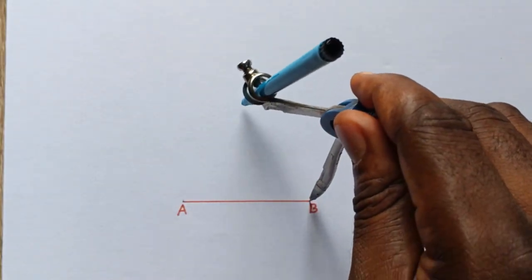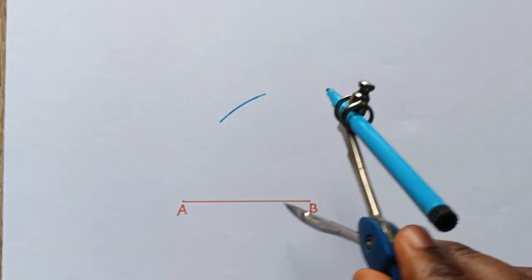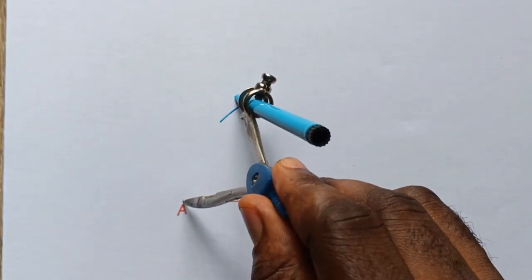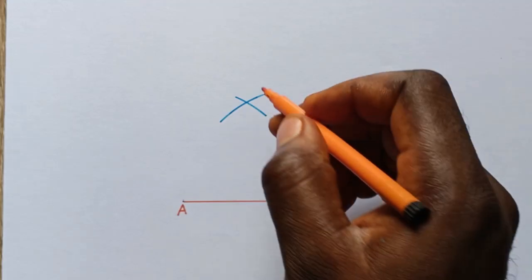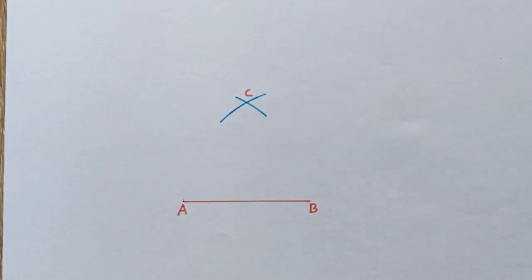Once you expand it to point A, cut an arc at the top. Now cut another arc, and where the two arcs intersect is your point C.